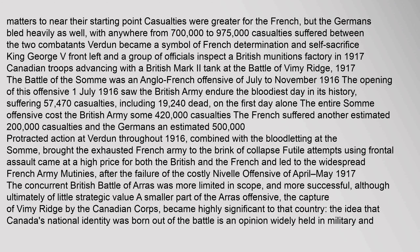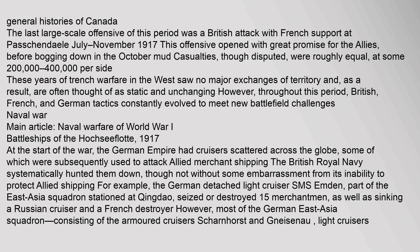The Battle of the Somme was an Anglo-French offensive of July to November 1916. The opening on 1 July 1916 saw the British Army endure the bloodiest day in its history, suffering 57,470 casualties, including 19,240 dead, on the first day alone. The entire Somme offensive cost the British Army some 420,000 casualties; the French suffered an estimated 200,000 casualties and the Germans an estimated 500,000. Protracted action at Verdun throughout 1916, combined with the bloodletting at the Somme, brought the exhausted French Army to the brink of collapse. After the failure of the costly Novelle Offensive of April to May 1917, a smaller part of the Eris Offensive — the capture of Vimy Ridge by the Canadian Corps — became highly significant, with the idea that Canada's national identity was born out of the battle widely held in military and general histories of Canada.